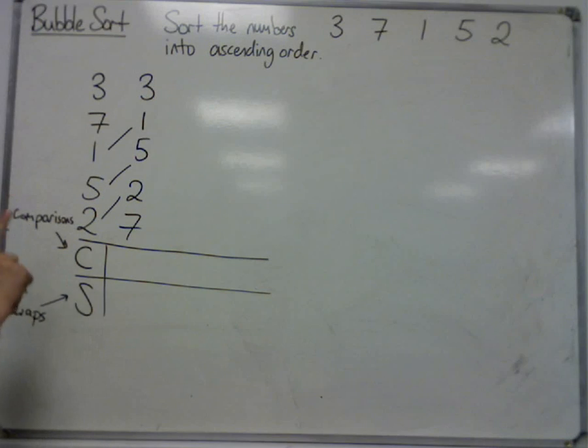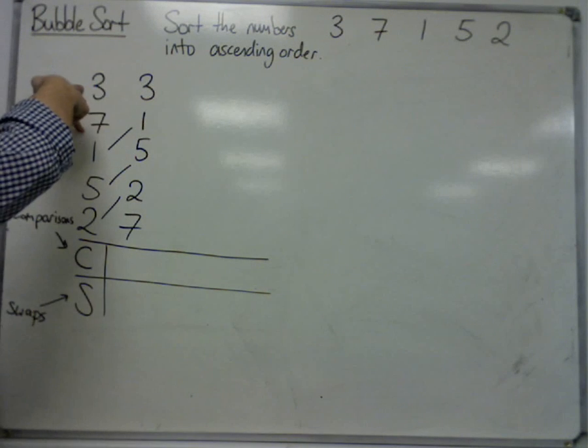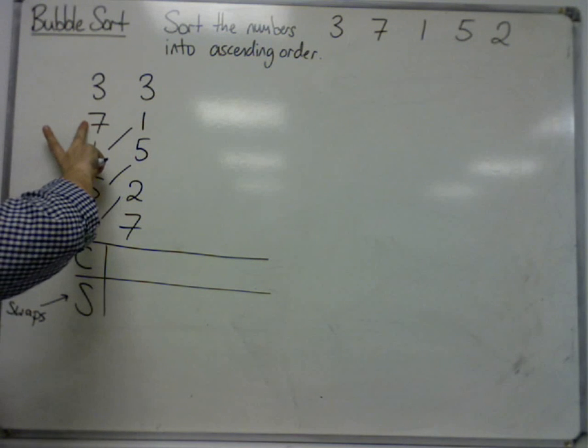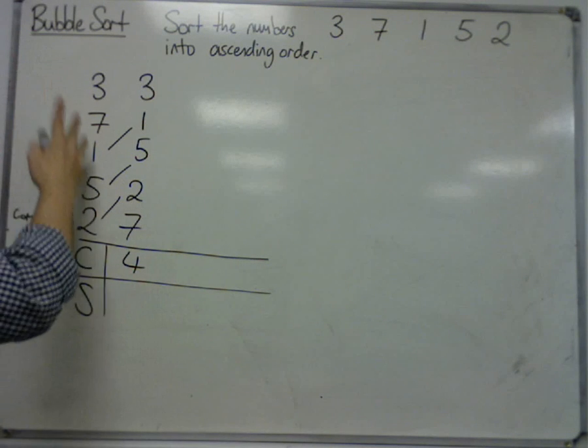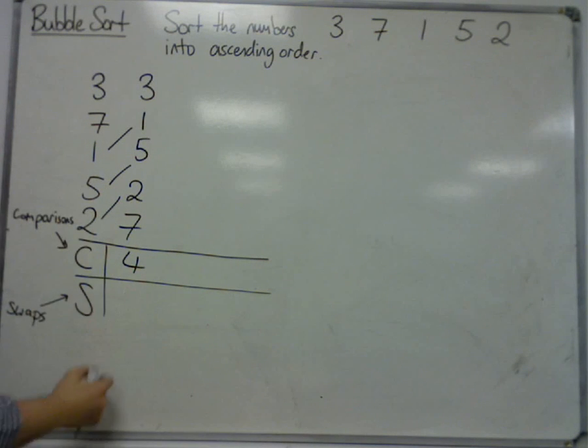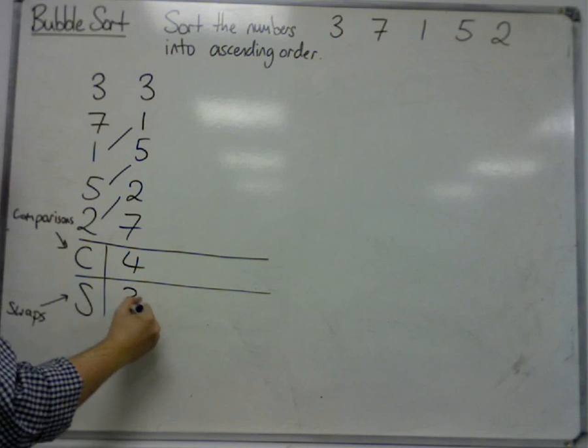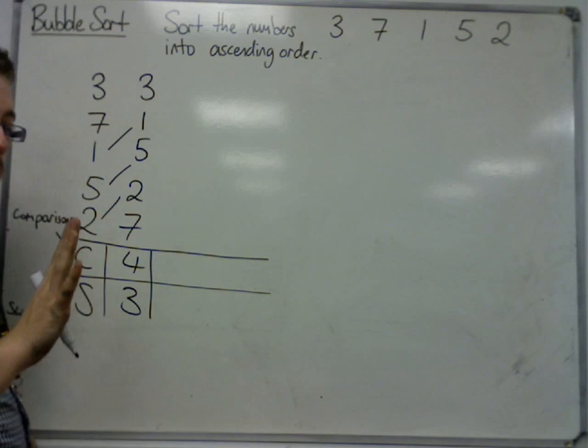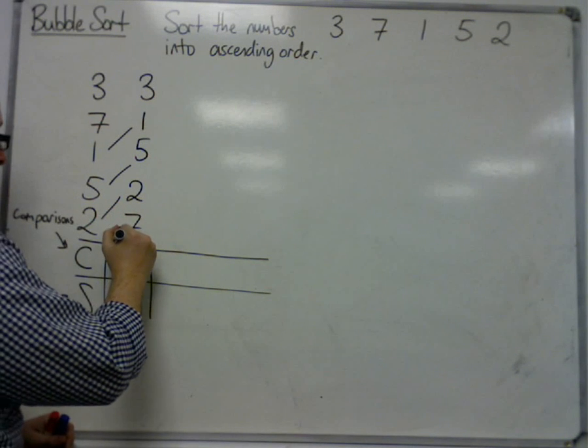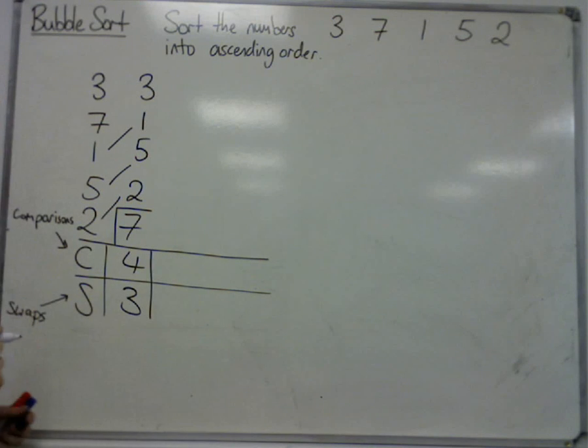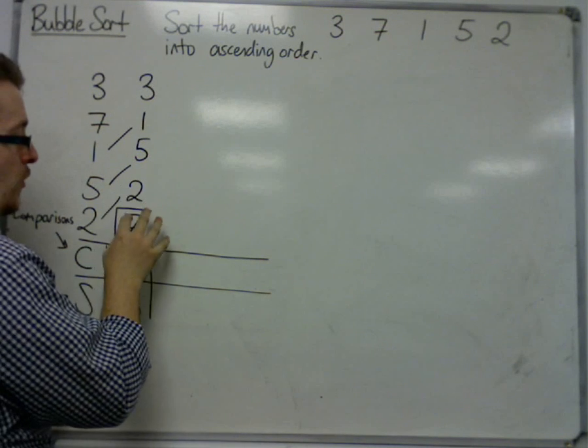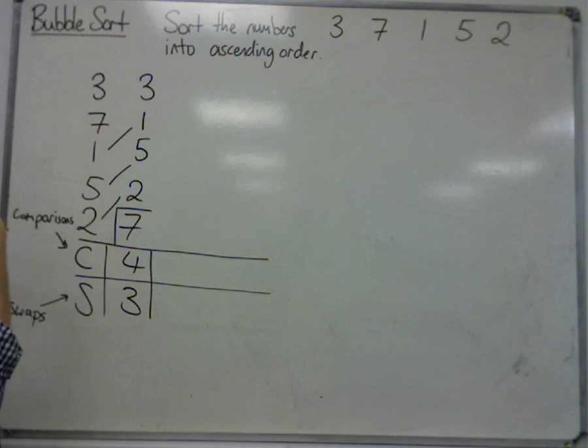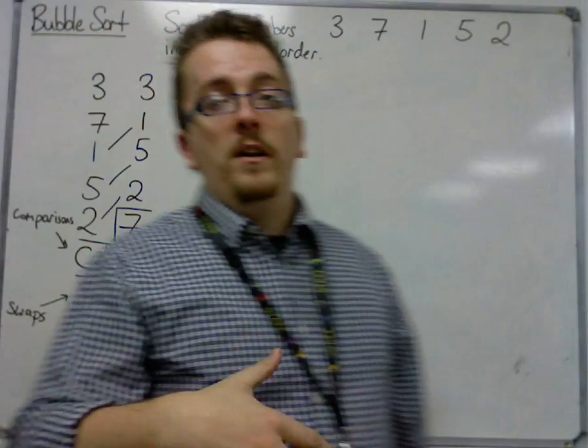So the number of comparisons that we made was 1, 2, 3, 4. So we made 4 comparisons. Notice how there are 5 numbers, 4 comparisons. And we made 1, 2, 3 swaps. Now, every time a number drops to the bottom, we can box it off. So what effectively we've done is that we can ignore any of the numbers that are boxed off because they have been dealt with. And the computer has an algorithm, and in the algorithm, the computer knows this.